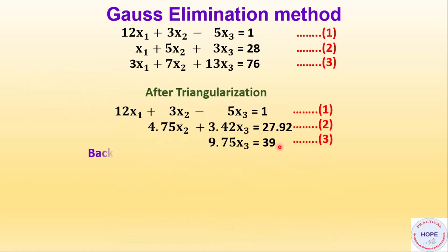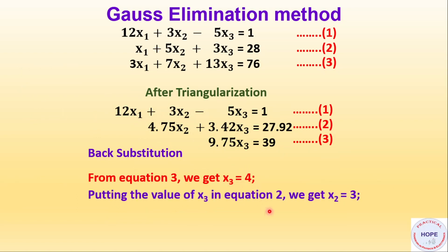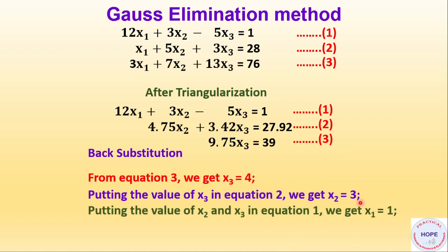Now we will do the back substitution. From the third equation we can calculate x3 equal to 39 divided by 9.75, so x3 is 4. Putting the value of x3 in equation 2, we get x2. And finally putting the values of x2 and x3 in equation 1, we get the value of x1. This way we solve the set of equations and find all the solutions.